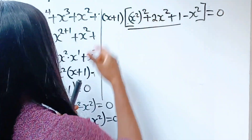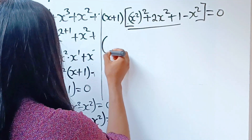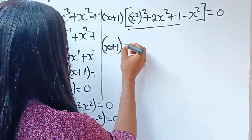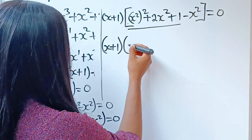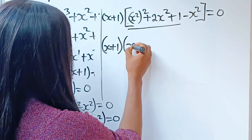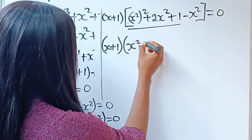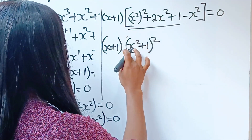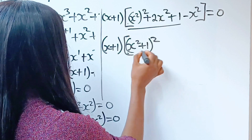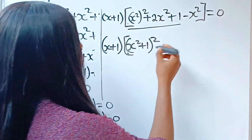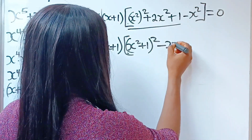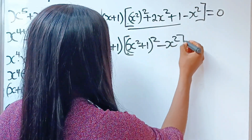So, that means this is equal to x squared plus 1, everything squared. So, I am going to write that now. This is x plus 1 multiplied by x squared plus 1, all squared, minus x squared.